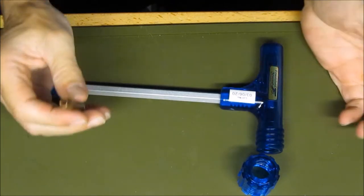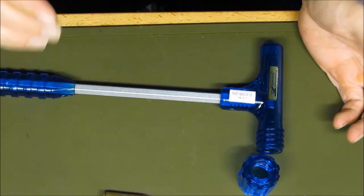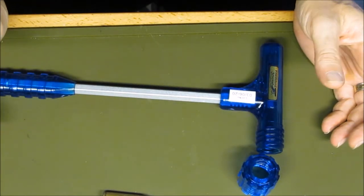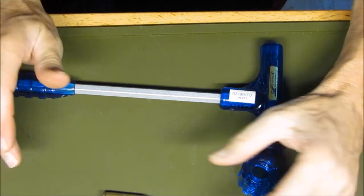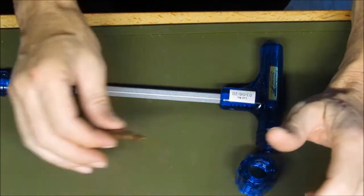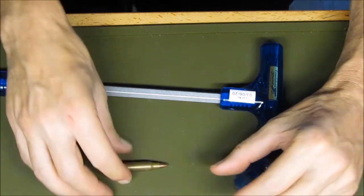And that's basically what bullet pullers are for. If you make a mistake while reloading and you need to pull that bullet, this is how you do it.